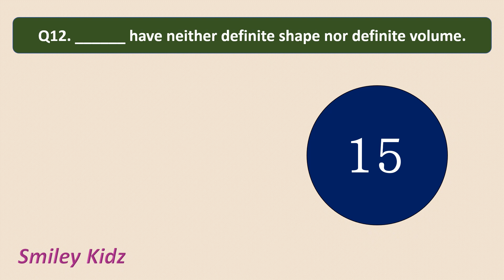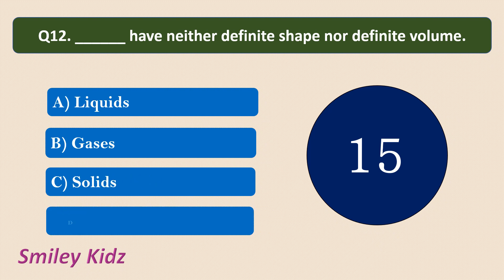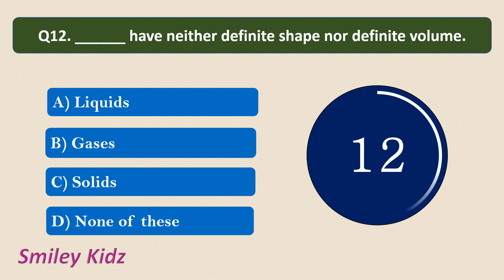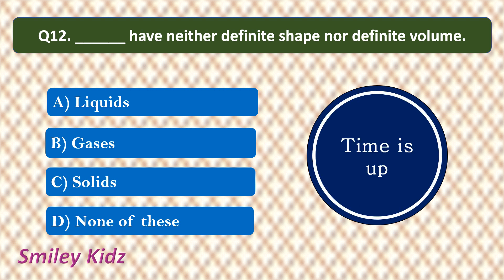Question number 12. Dash have neither definite shape nor definite volume. Your options are Liquids, Gases, Solids, or None of these. Your time starts now. Your time is up and the correct answer is Gases. Gases have neither definite shape nor definite volume. They don't have a definite shape or a definite volume. So, our answer is gases.